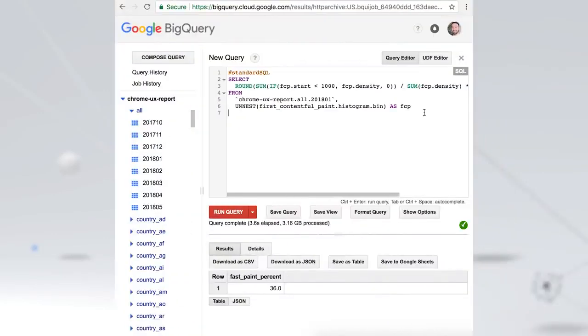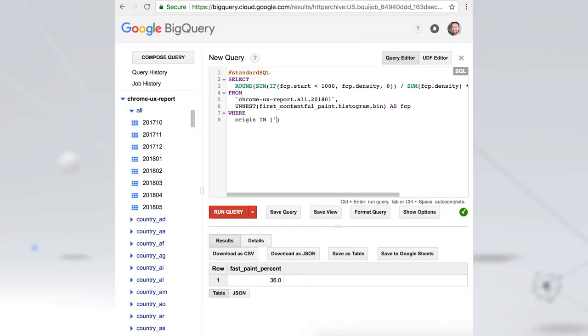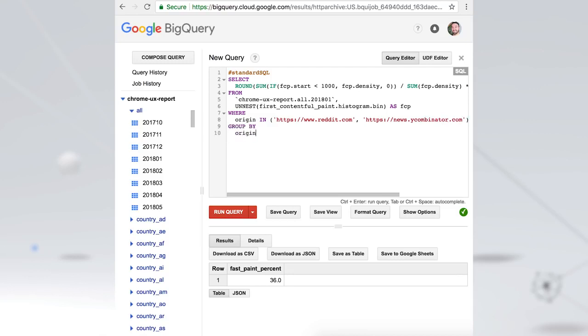Out of the millions of origins in the dataset, things get really interesting when you look at competitors head to head. For example, let's compare the FCP distributions of Reddit and Hacker News. We could start with the previous query and simply group by the competing origins. By adding the average and slow densities, we get a more complete picture of the distribution and see that Reddit actually skews slightly slower.